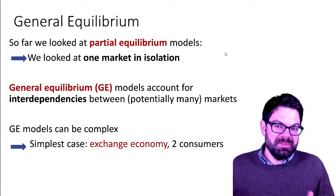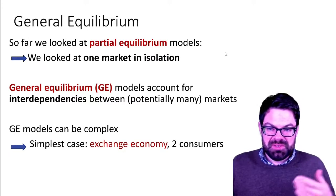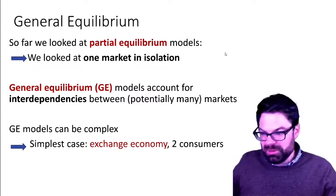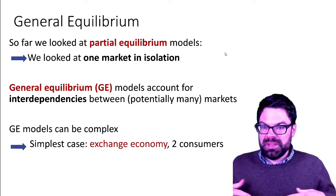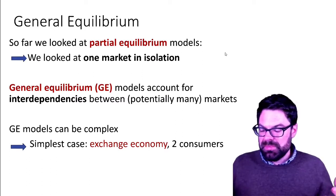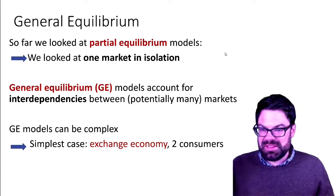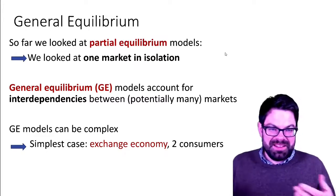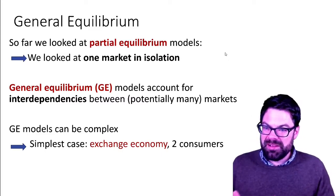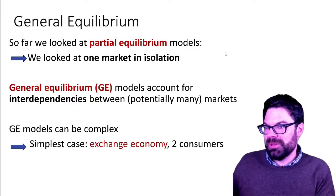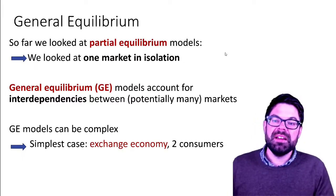Markets are interdependent because everyone only has a certain budget to spend, and if they don't spend it on one good they spend it on another. But also because some goods have related demand — such as popcorn and cinema tickets, for example, where if the demand for one goes up the demand for the other tends to go up as well, because they're complements.